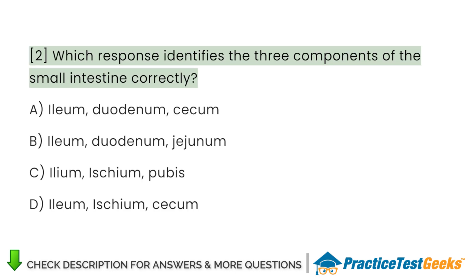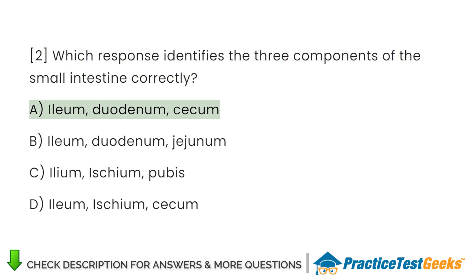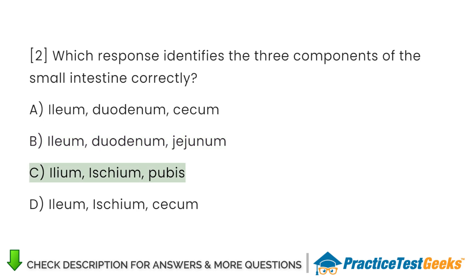Which response identifies the three components of the small intestine correctly? A. Ilium, duodenum, cecum. B. Ilium, duodenum, jejunum. C. Ilium, ischium, pubis. D. Ilium, ischium, cecum.